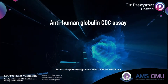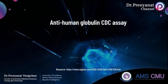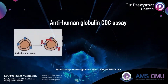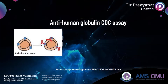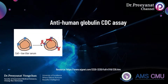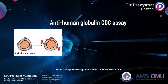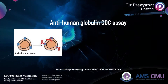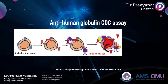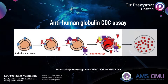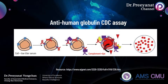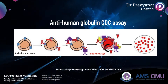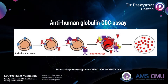Complement-dependent cell cytotoxicity (CDC) is sensitivity-limited. In cases of low-titer antibody, this can be overcome by increasing the incubation time using the anti-human globulin enhanced method, as well as additional washing steps. The complement-fixing anti-human globulin will bind to any IgG present on the cells, which increases the chance of activating complement and increases the sensitivity of the test.